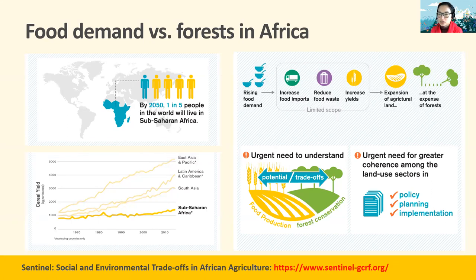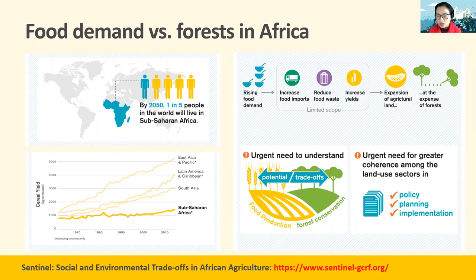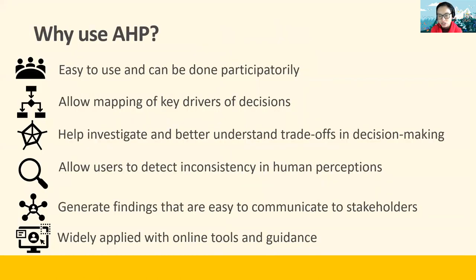It's also important to note that there are many different land manager types in Africa. While the majority are smallholder individual farmers, there are also an increasing number of farmer cooperatives, local and international companies, as well as public agencies and non-profit organizations managing agriculture land. They may all have different preferences and decision-making processes, but there's currently little research to understand the drivers of their decisions. AHP was used as a methodology in Ghana and Zambia to fill this research gap as part of the Sentinel project. You can find more information about the Sentinel project by visiting the link shown at the bottom of the slide.